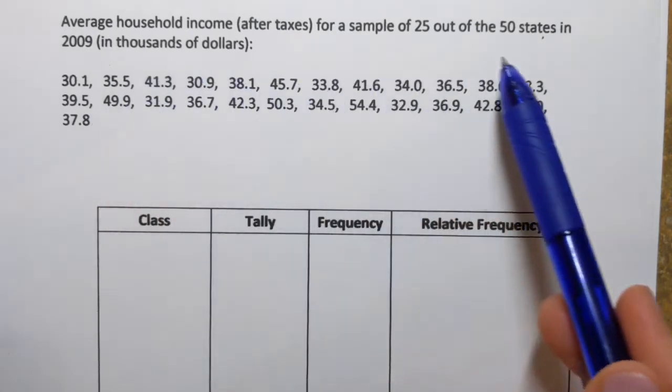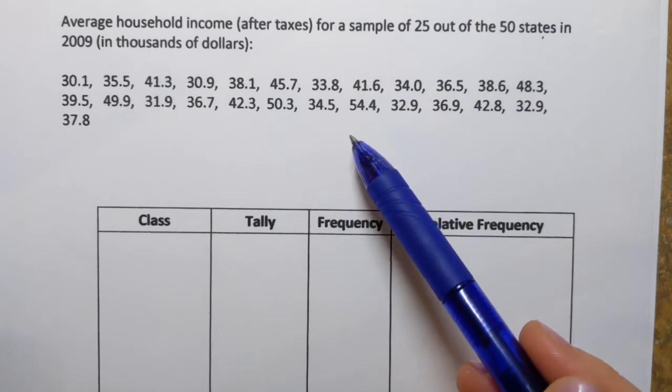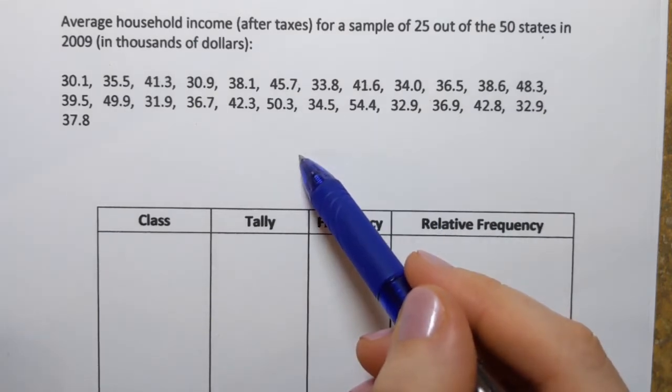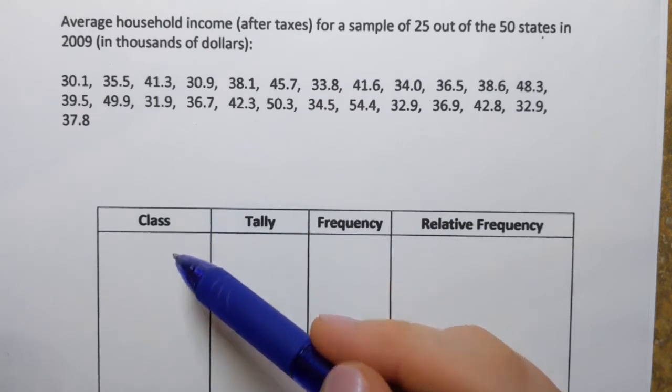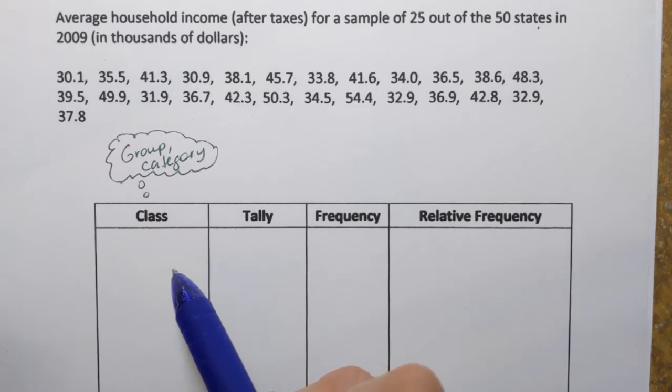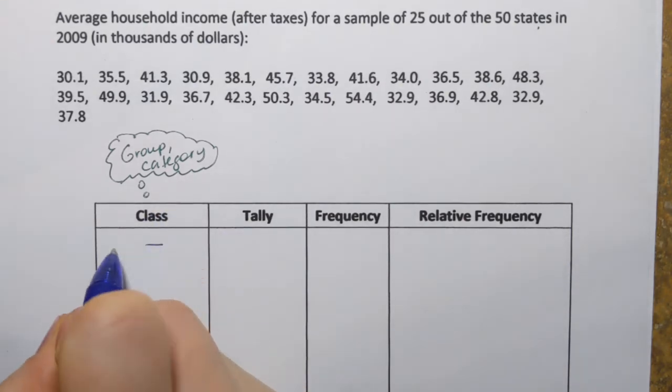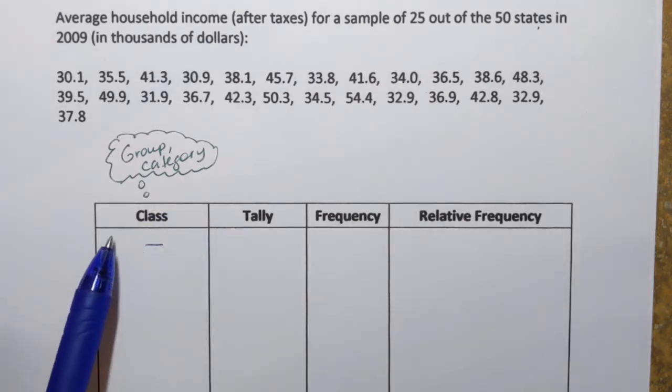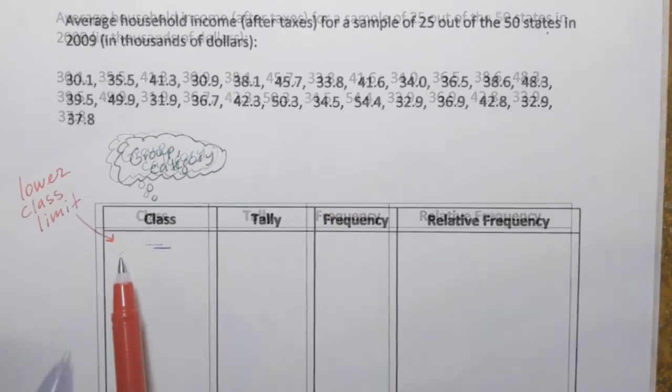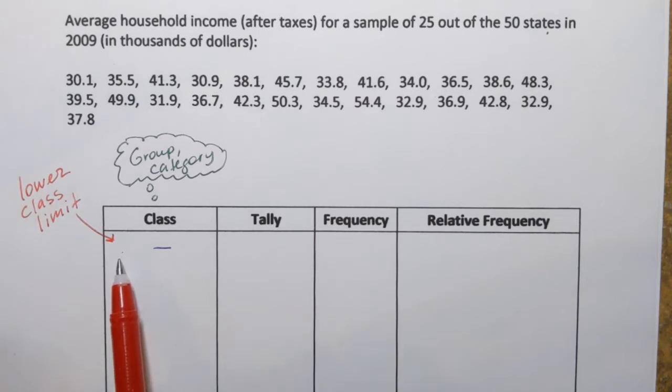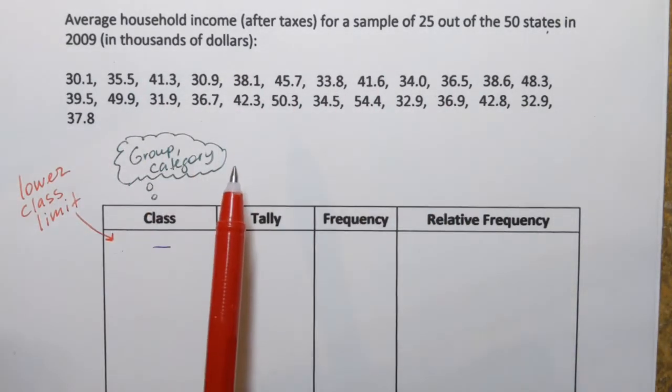For that, we're going to split this data set into groups. However, in statistics, instead of saying groups, we usually use the word classes. So we're going to create classes. Each class is going to look like a range of two numbers. Now, what is the first number that we have to use here? By the way, this first number has a name. It's called the lower class limit. Generally, the lower class limit for the first class is either the smallest observation in the data set or a convenient number.